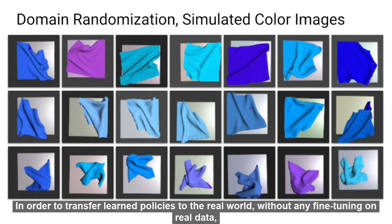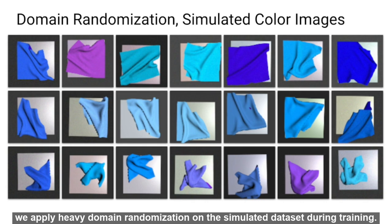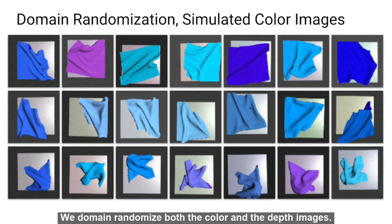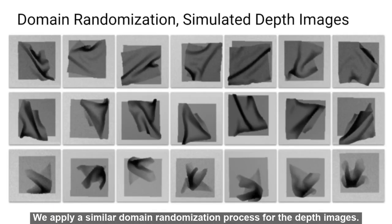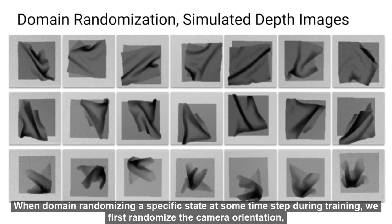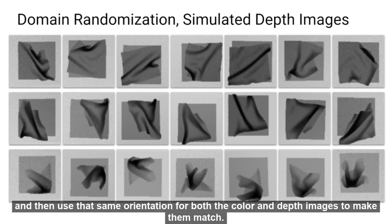In order to transfer the learned policy to the real world without any fine tuning on real data, we apply heavy domain randomization on the simulated dataset during training. We domain randomize both the color and the depth images. Here are examples of domain randomized color images where we vary the fabric color, the shading of the background plane, and the camera orientation. We apply a similar domain randomization process for the depth images. When domain randomizing at a specific state during training, we first randomize the camera orientation and then use that same orientation for both the color and depth images to make them match.